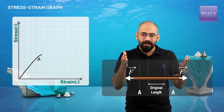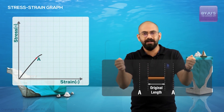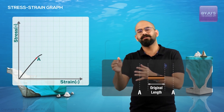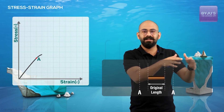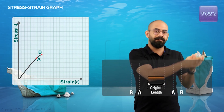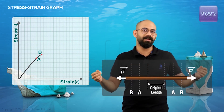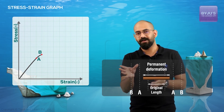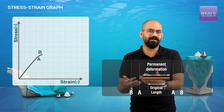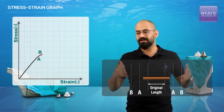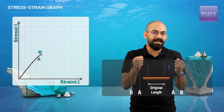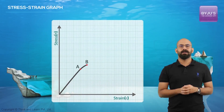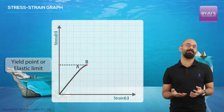Even though proportionality is lost after point A, if we bring the force back slowly the wire still returns to its original length — it is still elastic. But then there is a point B. If we increase the stress beyond point B and then slowly reduce the force, at zero stress there is still a net elongation — a permanent deformation. Point B is called the yield point or elastic limit, and the stress at that point is called the yield stress.